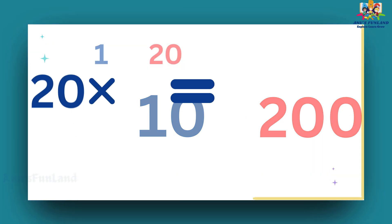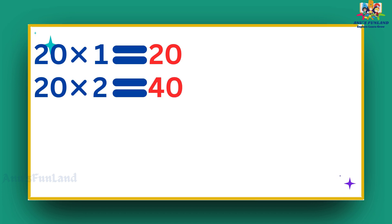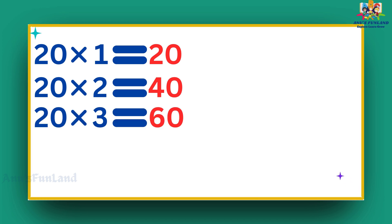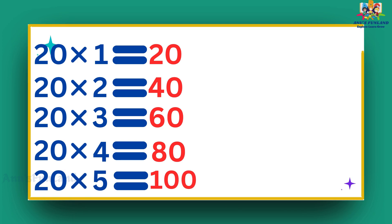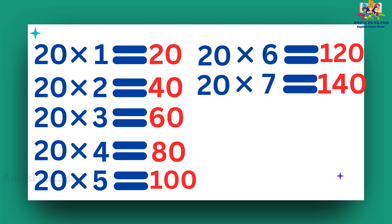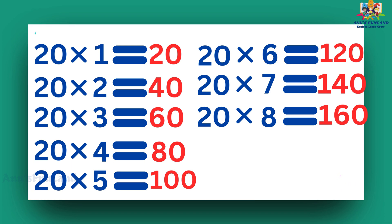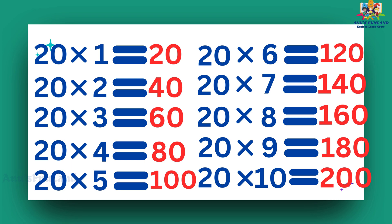20 ones are 20. 20 twos are 40. 20 threes are 60. 20 fours are 80. 20 fives are 100. 20 sixes are 120. 20 sevens are 140. 20 eights are 160. 20 nines are 180. 20 tens are 200.